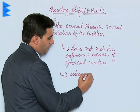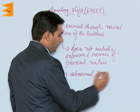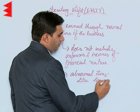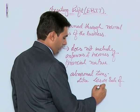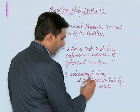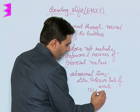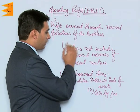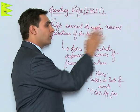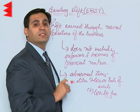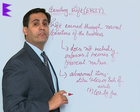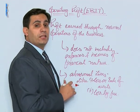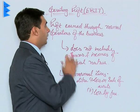It also does not include any abnormal items, like loss on sale of assets or loss by fire. These are all abnormal expenses and are not included. So when we say normal operations of the business, that means normal sale and purchase activity — any abnormal or financial items are excluded, and the resulting profit is called operating profit.